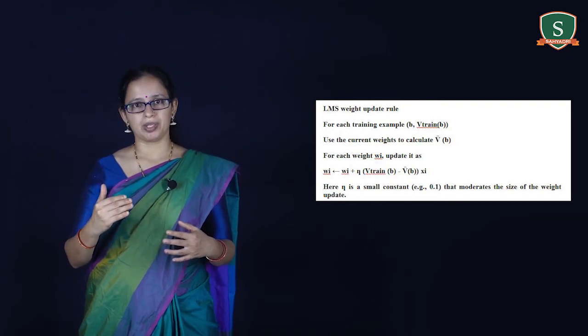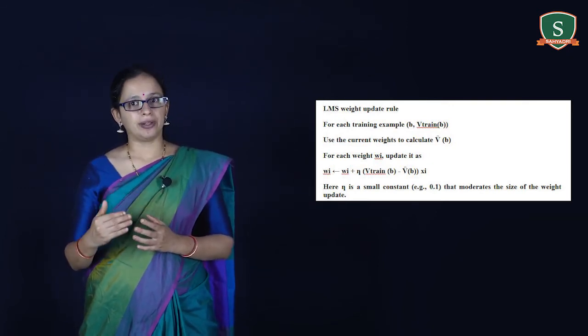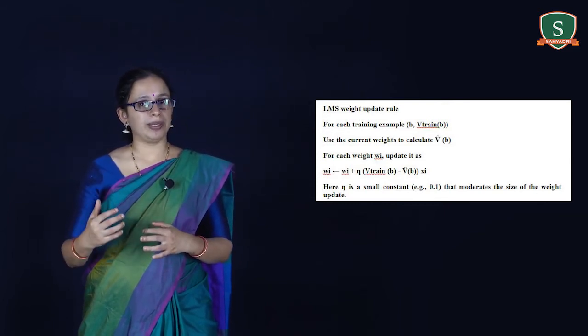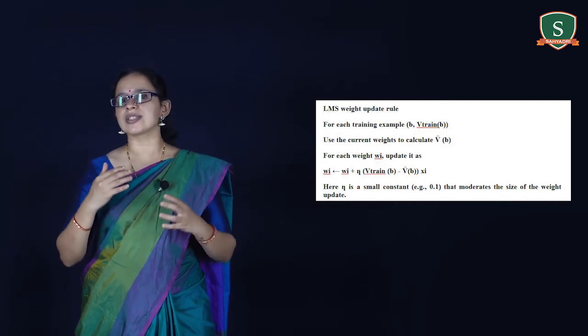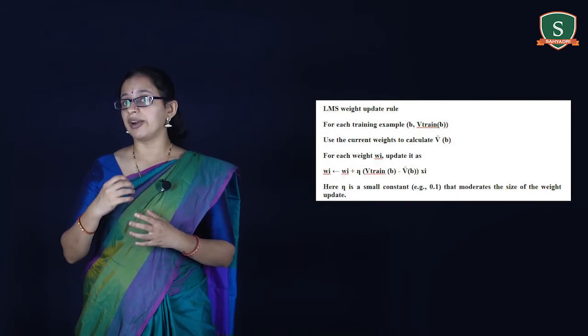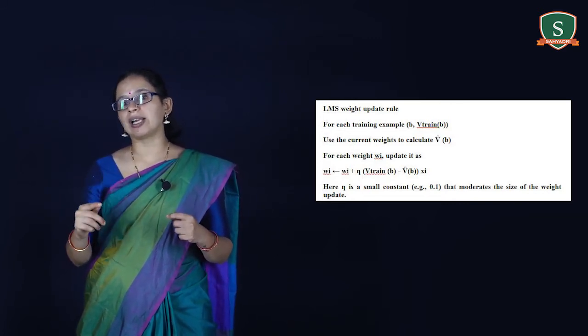The weight update rule works as follows: when the training value and approximation match (error = 0), no weights are changed. When the error W_train(B) − V̂(B) is positive, meaning V̂ is too low, each weight is increased in proportion to the value of its corresponding feature, raising the value of V̂ and reducing the error. If the value of some feature Xi is 0, its weight is not altered regardless of the error, so only weights whose features actually occur in the training examples are updated.